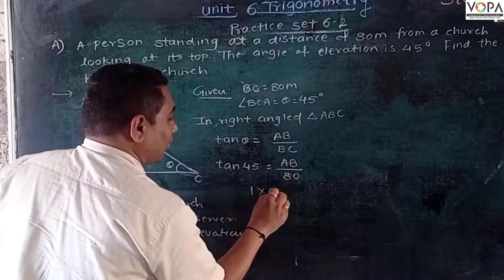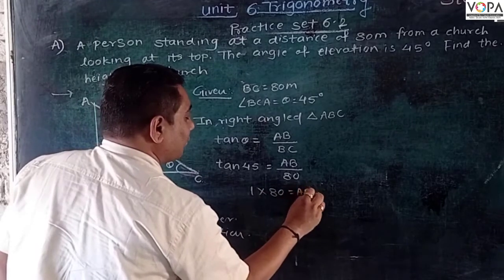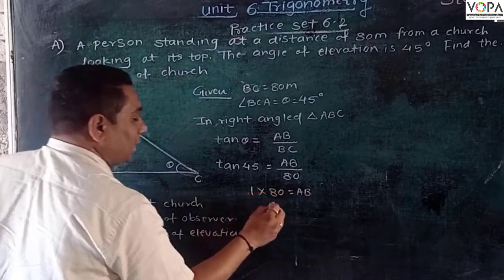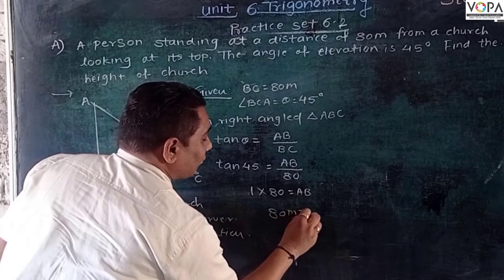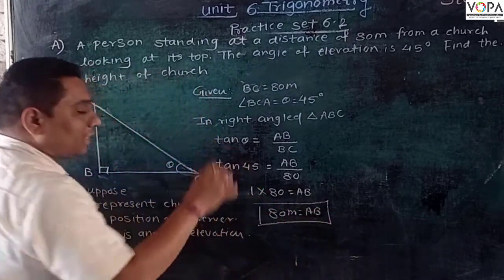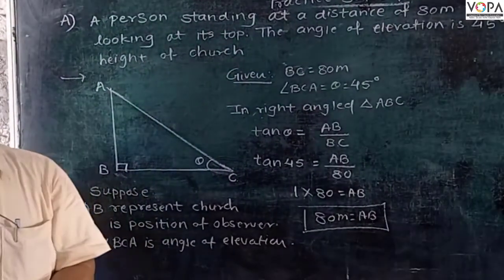Taking 80 to this side, 80 times 1 equals AB. So the value of AB is 80 meters, which is the height of the church.